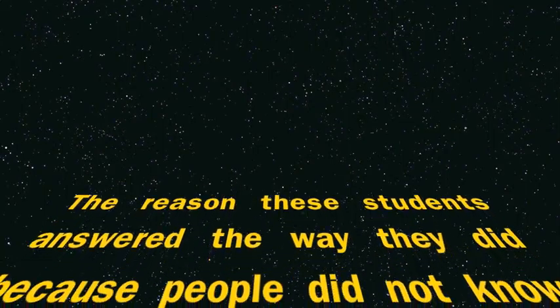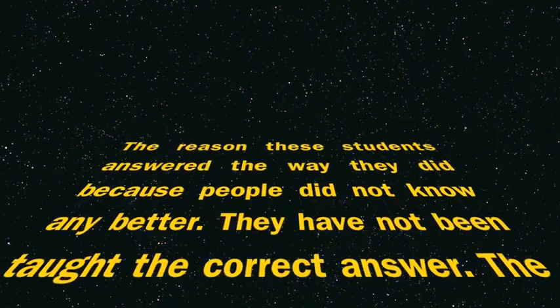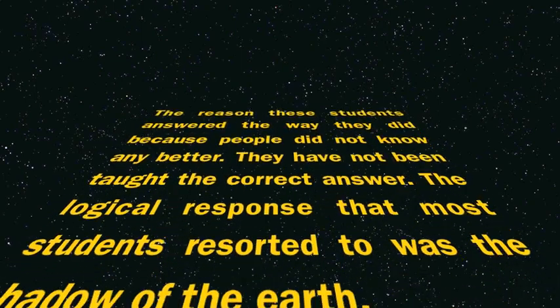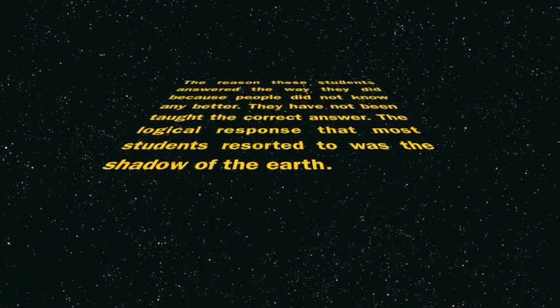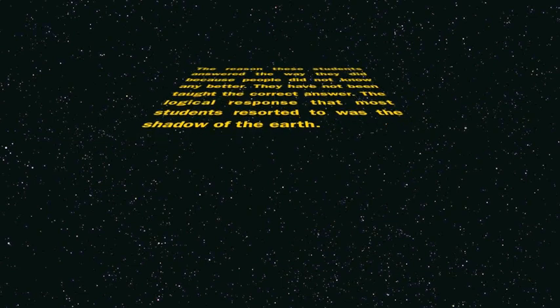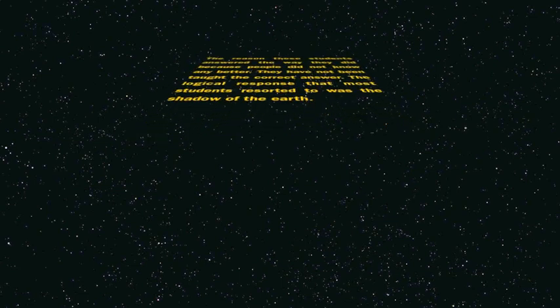The moon goes through eight different phases — the moon looks different but it never really changes. It depends on the position of the lunar cycle. The moon goes through eight different phases; it depends on the position.